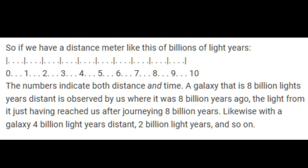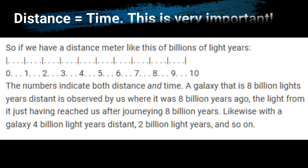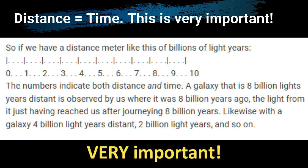That means that the light we see is as the object was a year ago, a million years ago, a billion years ago. So when astronomers talk about galaxies billions of light years away, they also mean their observations are of those objects as they were and where they were billions of years ago. If we have a distance meter of billions of light years, think from zero, where we are today, to ten, ten billion light years away. Those numbers indicate both distance and time.